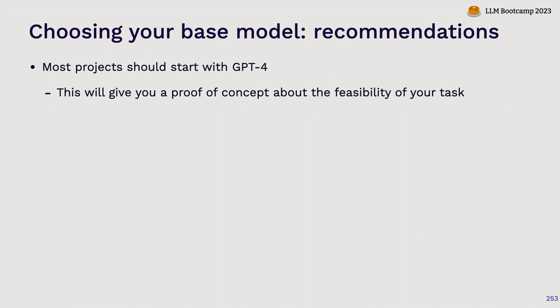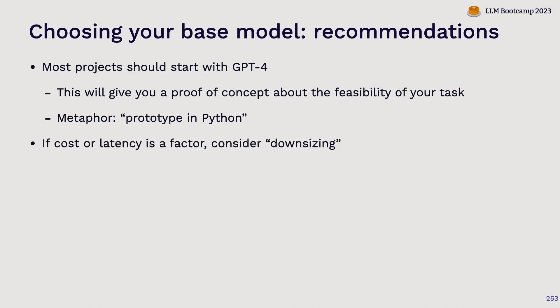So again, most projects should start with GPT-4. This gives you proof of concept about feasibility. The metaphor is like software engineering: typically you prototype in the highest-level language you can to reduce development time and avoid premature optimization. Then for whatever ends up on the critical path — things that are performance bottlenecks — you might reimplement in C or Rust. I think of building with LLMs similarly: you prototype with the highest-level language possible, which is GPT-4. As your stack matures, you can start replacing parts of the GPT-4 stack with smaller, faster, cheaper models — whether open source or smaller commercial models.